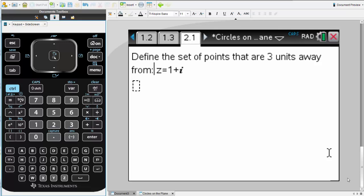Define the set of points that are 3 units away from z equals 1 plus i. Now you'll need to pause the video because I'll reveal the solution as soon as you resume.